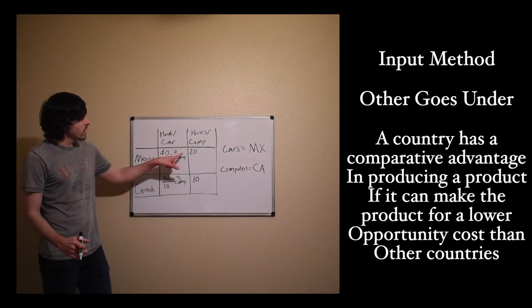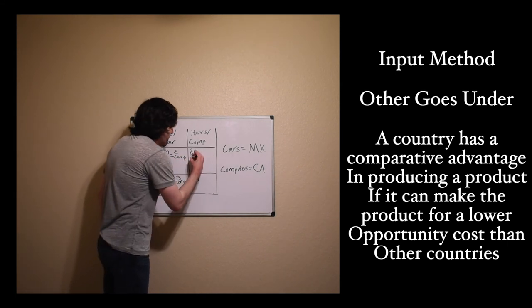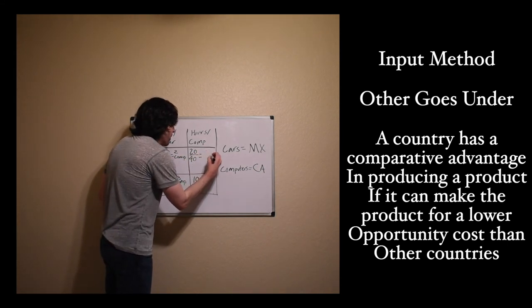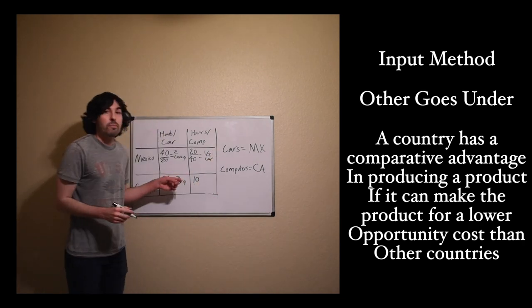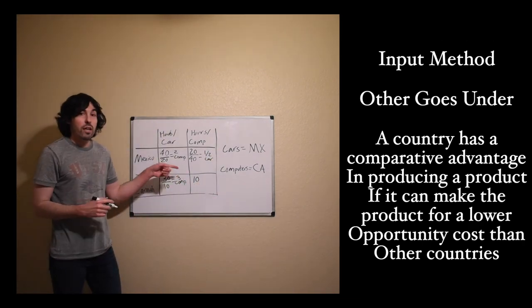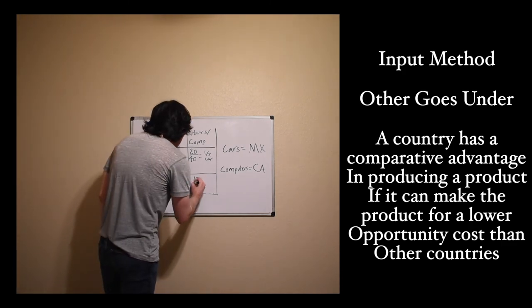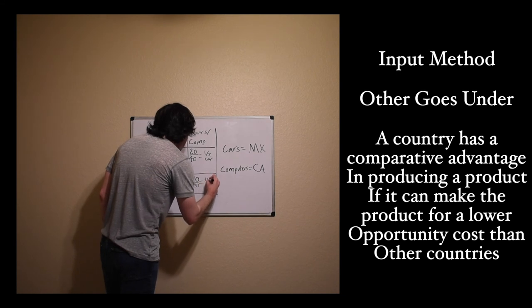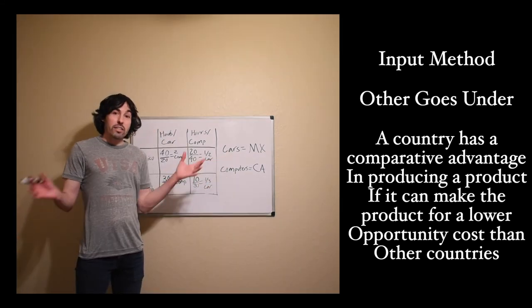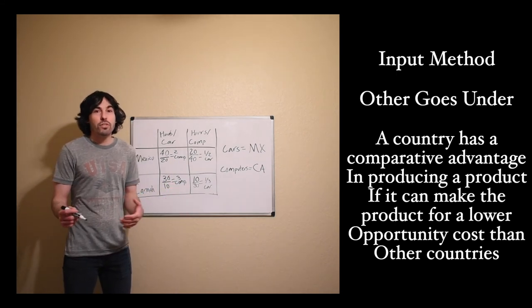Let's do the math to confirm. For computers in Mexico, other goes under: 20 over 40 equals one-half of a car. Every time Mexico makes one computer, they give up half a car. And for Canada, other goes under: 10 over 30 comes out to one-third of a car. So Mexico has the comparative advantage in producing cars, whereas Canada has the comparative advantage in producing computers.